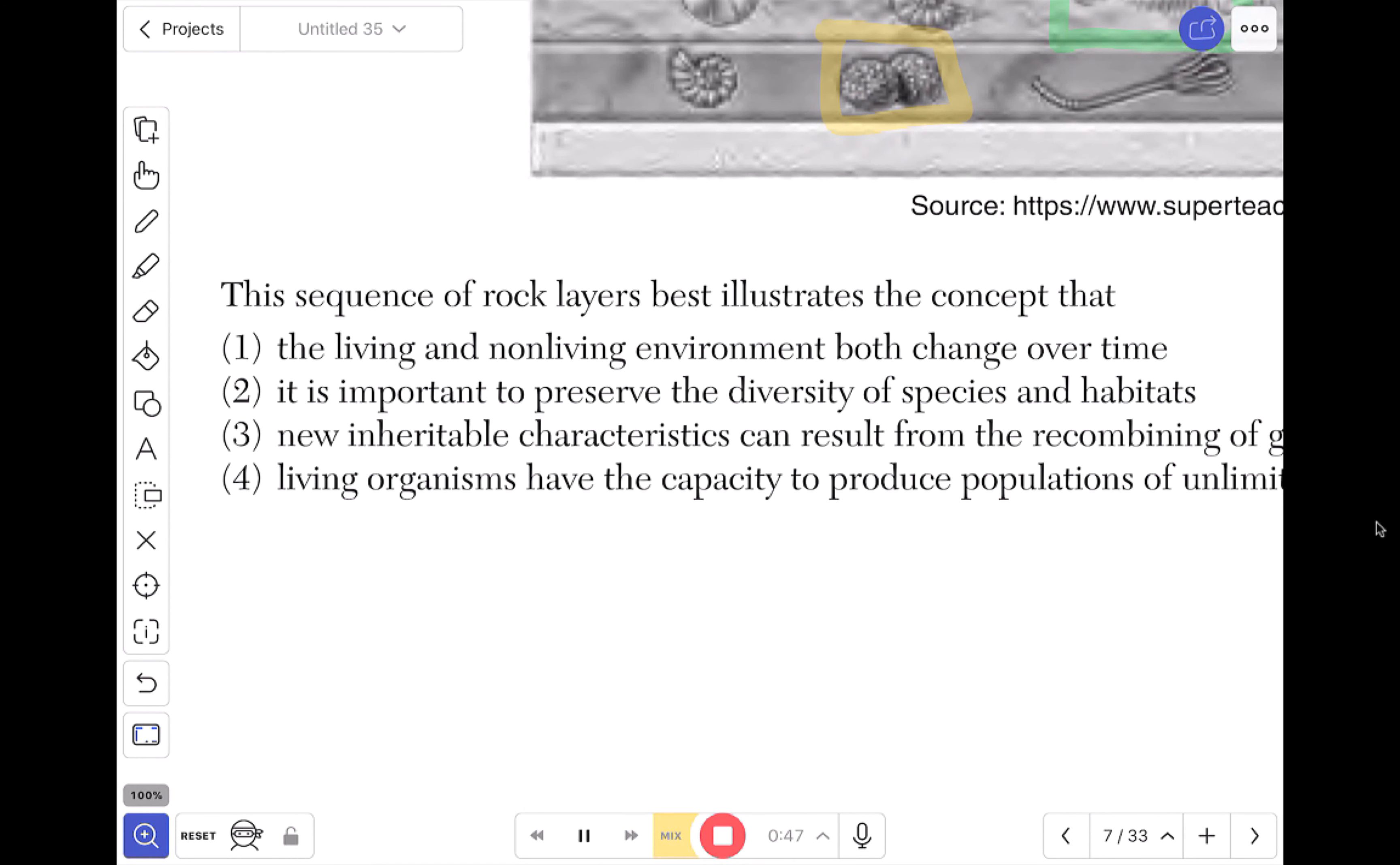I know that all students, not just students with IEPs, but I think that all students benefit from having questions read out loud. So, the sequence of rock layers best illustrates the concept that: living and non-living environment both change over time. I like the idea that it is important to preserve the diversity of species and habitats. That doesn't make a whole lot of sense to me so we can rule that out.